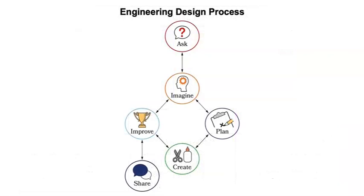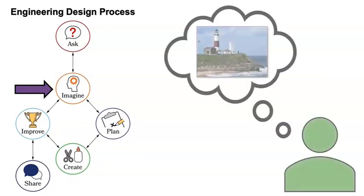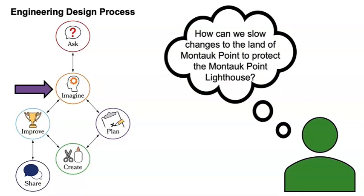Time to move on to the next stage of the engineering design process. Do you know what stage that is? Call it out. It's the Imagine stage. In this stage, engineers conduct research, examine possible materials, and brainstorm solutions. We will imagine different solutions and then select materials that work together to create our shoreline protection system. This information will help us investigate the question, how can we slow changes to the land of Montauk Point to protect the Montauk Point Lighthouse? Are you ready to get started? Let's go.